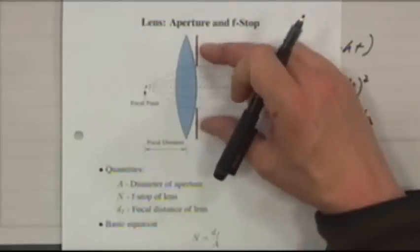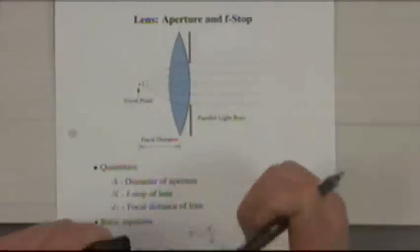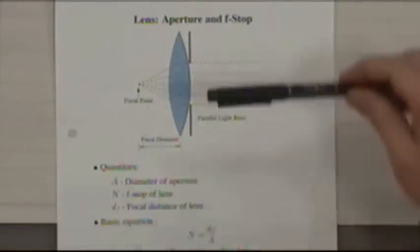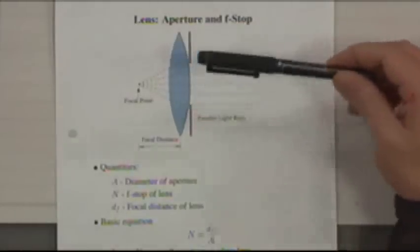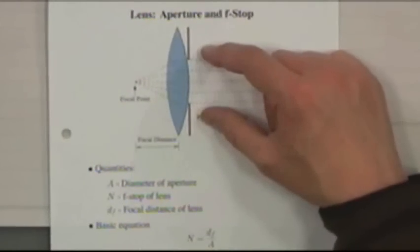Is it always better to have a faster lens with a lower f-stop? The answer is no — there are important trade-offs. If you talk to a photographer and ask whether a larger or smaller aperture is better, they'll say it really depends on what you're trying to do.